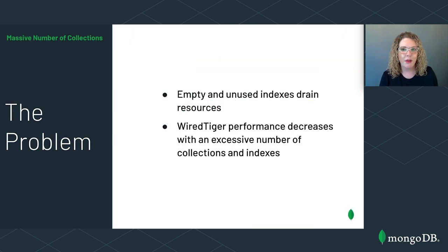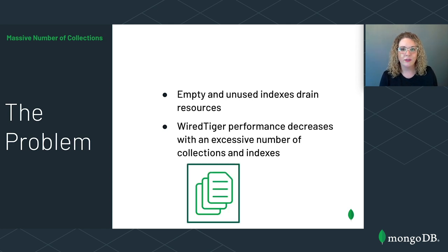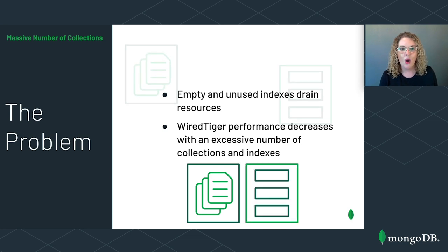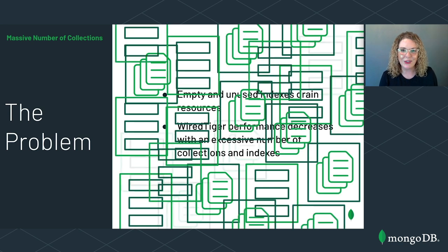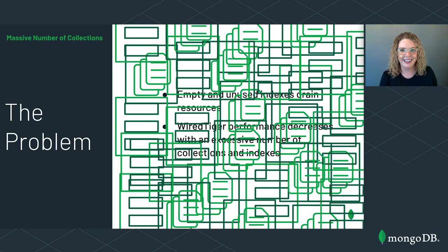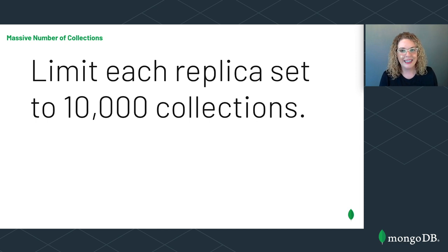WiredTiger is MongoDB's default storage engine. WiredTiger performance decreases with an excessive number of collections and indexes — it stores a file for each collection and a file for each index, and opens all files upon startup. In general, we recommend limiting each replica set to 10,000 collections. When users begin exceeding 10,000 collections, they typically see decreases in performance.